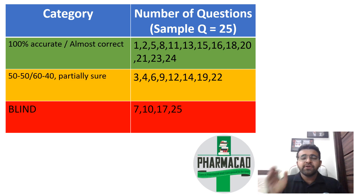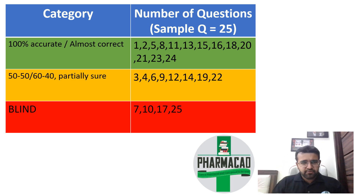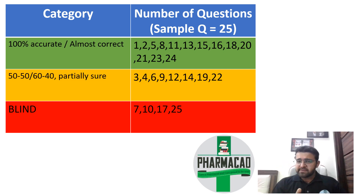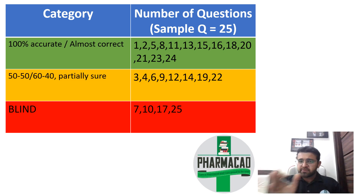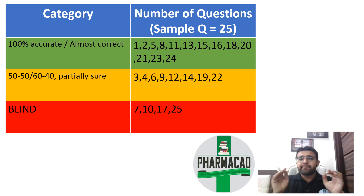What I want you guys to do is this: attempt the questions, categorize them into three categories, and write down the corresponding question number. Then you will finish the attempt and submit the paper.